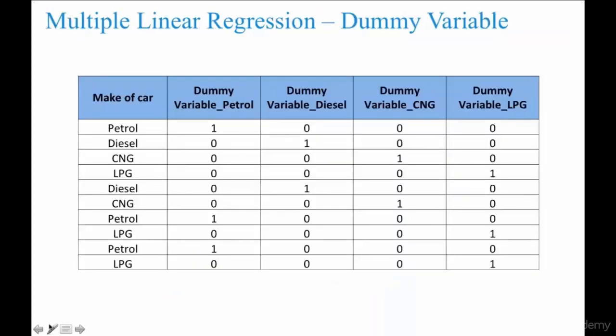What is that? Take a different scenario here. Say you have an input variable called make of car and it has four levels within that: petrol, diesel, CNG, and LPG.